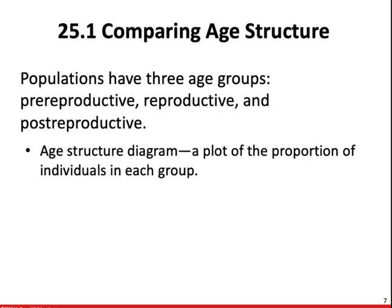Populations have three age groups: the pre-reproductive stage, reproductive stage, and post-reproductive stage. An age structure diagram is a plot of the proportion of individuals in each group. Replacement reproduction occurs when each couple has two children. This will still cause populations to increase because of life expectancy, as most people will become parents, grandparents, or even great-grandparents, resulting in a population increase.